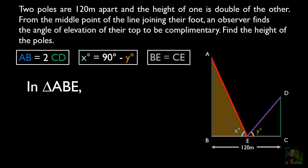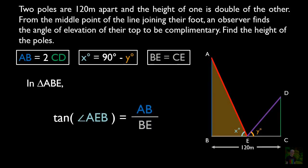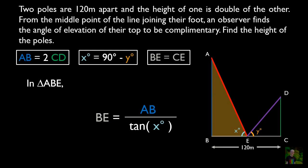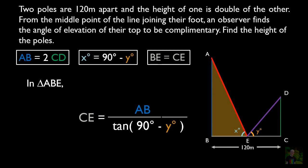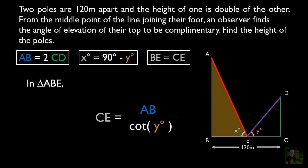In triangle ABE, tan(angle AEB) equals AB by BE. Angle AEB equals X degrees. After cross-multiplying, we replace BE with CE since BE equals CE. Since X equals 90 minus Y, we substitute that value. Using the identity tan(90 minus Y) equals cot Y, we get a new equation with cot Y.